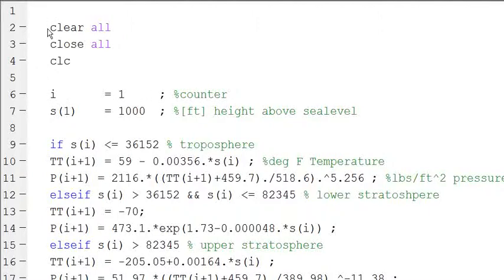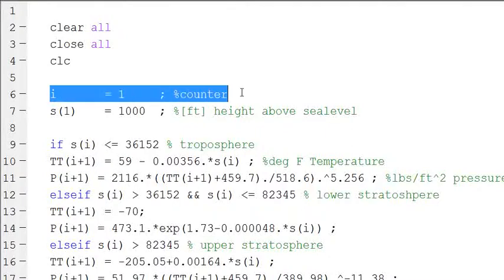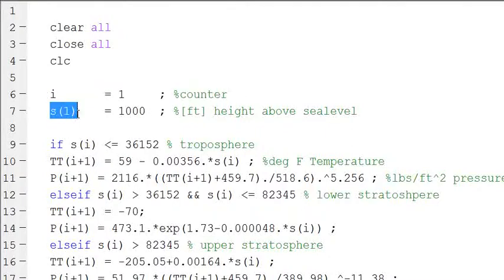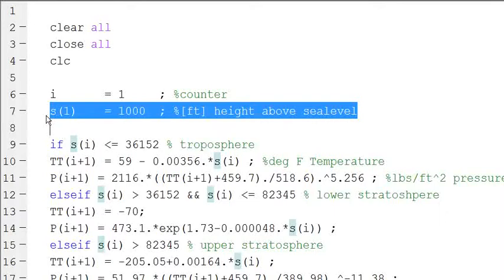First off, we normally start our scripts with clear all, close all, clc. This clears the workspace, closes all open windows, let's say open figures, and clears the command window. I'm going to set a counter i and set s as what I'm calling height above sea level, so this is kind of the normal way I'll write a variable. I have the name of the variable.